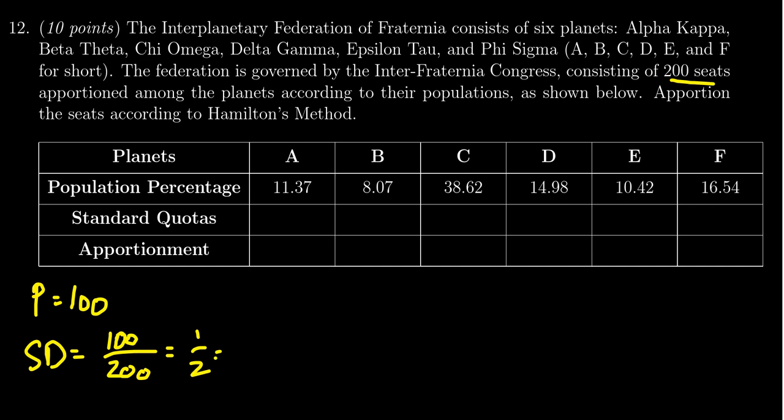Using that standard divisor, we're going to compute all of the standard quotas. So I'm going to take for example 11.37 and I'm going to divide it by 0.5, or if you want to think of it you're multiplying it by two, so dividing by one half is the same thing as multiplying by two. So you take 11.37 times it by two, you're going to get 22.74. The next one, 8.07, if you times it by two you get 16.14.